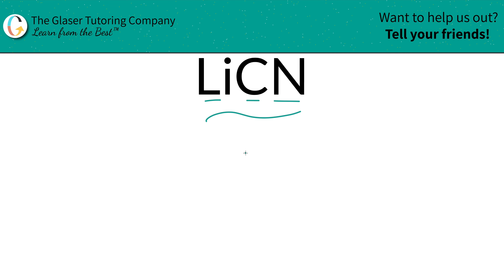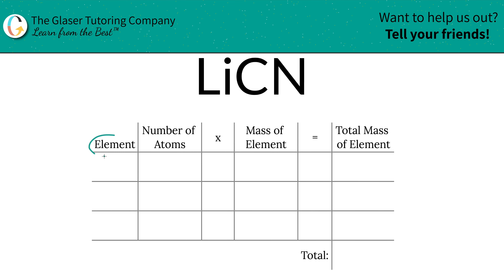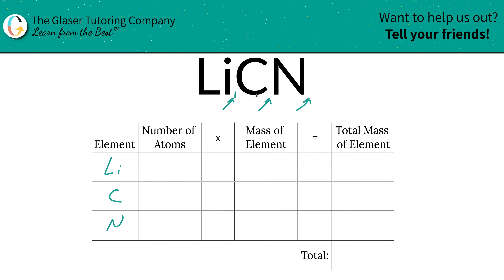We'll create a nice little table to help us out. The first step is to write the elements in the compound we see: lithium, carbon, nitrogen. Next is to identify the number of atoms — that's where the subscripts come into play. If you don't see any subscripts at the bottom of each element, just write a one, because there's assumed to be one.